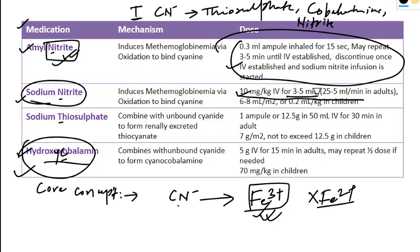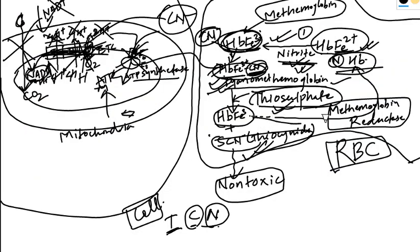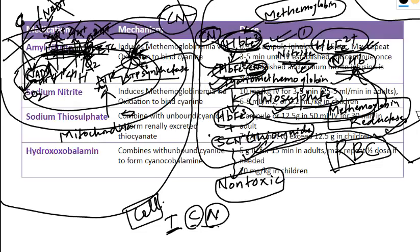Once met-hemoglobinemia is induced over three to five minutes, you then give thiosulfate over 30 minutes. The met-hemoglobin produced goes and binds all the cyanide, and the thiosulfate is available to detoxify it — taking the cyanide from the heme. The heme reverts to met-hemoglobin, and met-hemoglobin reductase converts it back to normal hemoglobin. This is the treatment of cyanide poisoning.